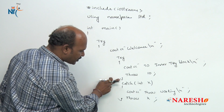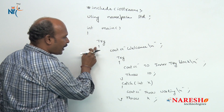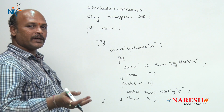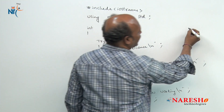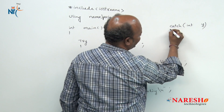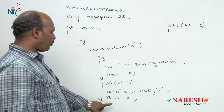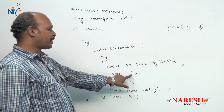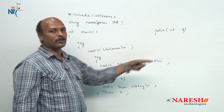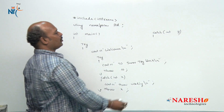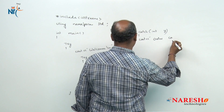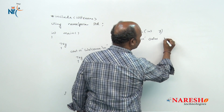Now this inner catch block completes and the outer try block is there. Every try block contains a related catch block. Now I am going to start another catch block — catch of int y. We are throwing throw x, which means 10, so once again it is throwing that value to this outer catch. Here I am going to write: 'outer catch block' or 'outer try block'.